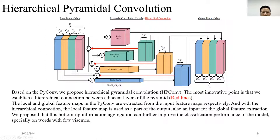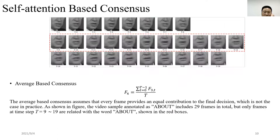Based on PyConv, we propose hierarchical pyramidal convolution, HPConv. The novelty here is that we establish a hierarchical connection between adjacent layers of the pyramid, red lines in the feature. As mentioned above, the local and global feature maps in PyConv are extracted from the input feature maps independently. With the hierarchical connections, local feature maps are used as part of the output and also as an input for the global feature extraction. This form of information aggregation can further improve the classification performance of the model, especially for words with only a few visemes. For every basic block of ResNet-18, we replace the second convolution layer with HPConv and call this modification hierarchical pyramidal ResNet-18, HP-ResNet-18.